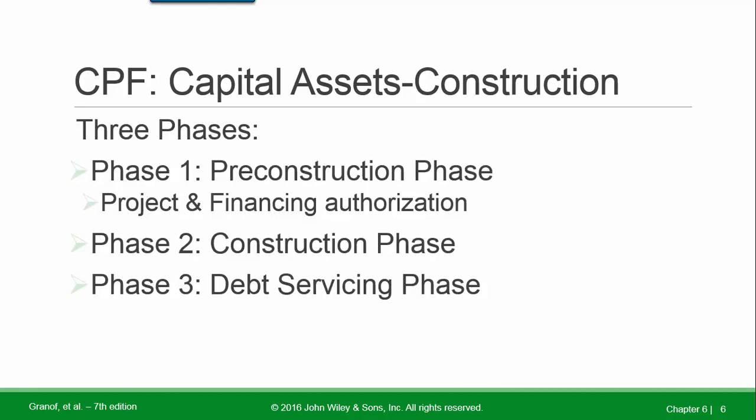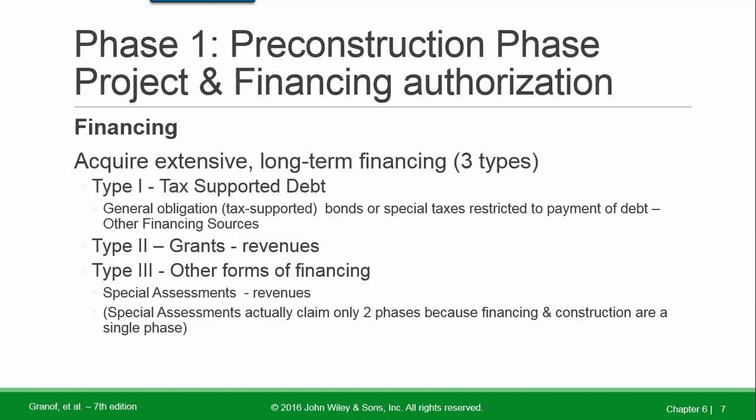Capital assets construction has three phases. Phase one: pre-construction — project and financing authorization. Phase two: construction. Phase three: debt servicing. In the pre-construction phase, the government acquires extensive long-term financing.